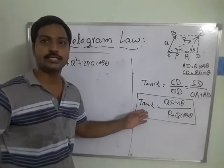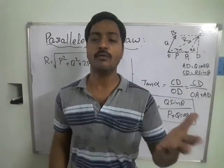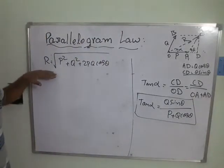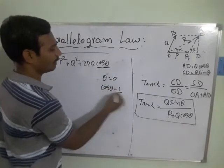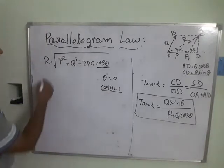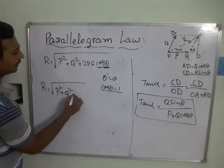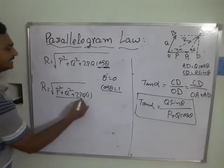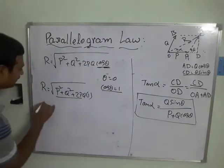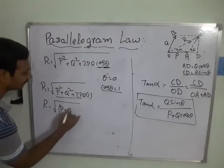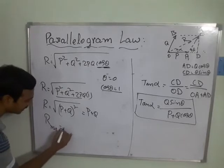The resultant is maximum when theta equals zero, because cos 0 = 1. Substituting: R = √(P² + Q² + 2PQ) = √(P + Q)² = P + Q. So the maximum resultant component R_max = P + Q.